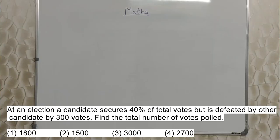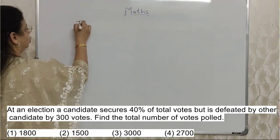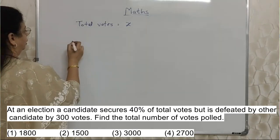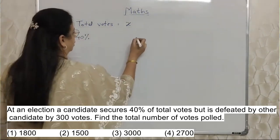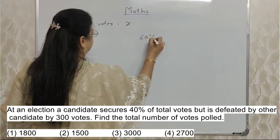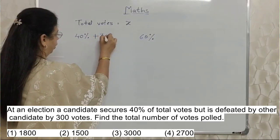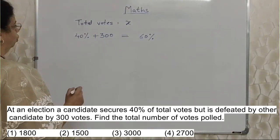Students, the next sum will appear on your screen. At an election, a candidate secures 40% of total votes but is defeated by the other candidate by 300 votes. Find the total number of votes polled. Now let's assume total votes as x, because we don't know. Out of that, the defeated candidate has got 40%, and the winner has got 60%, and the difference between them is 300 votes.